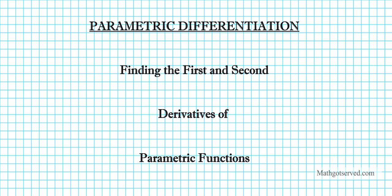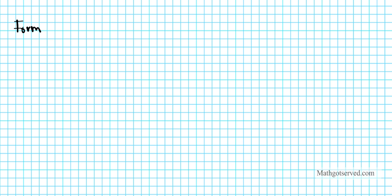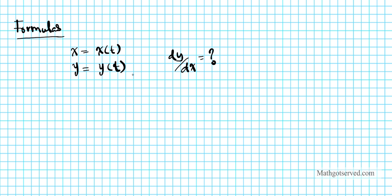Good day students and welcome to our clip on parametric differentiation. We're going to be using some formulas we're going to derive to find the first and second derivatives of parametric functions. So before we take a look at an example, we're going to go ahead and derive the formulas that we're going to be using today. So let's say we have a parametric equation in two variables: x equals x of t and y equals y of t. The question is, how do you find dy/dx of a parametric equation of this nature?